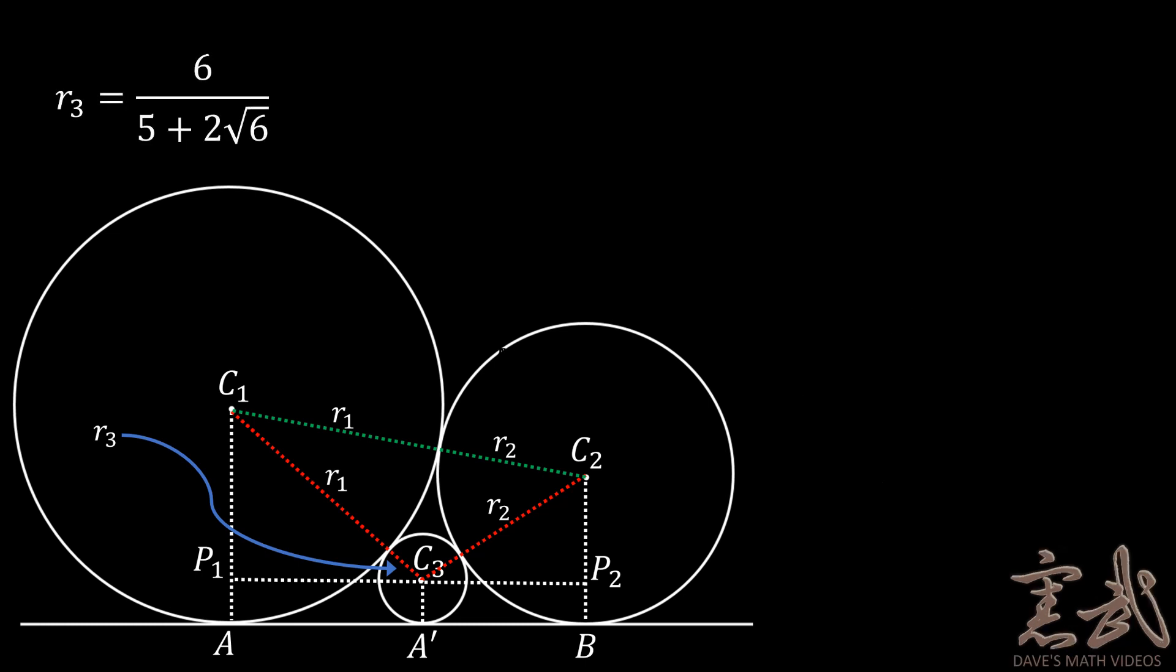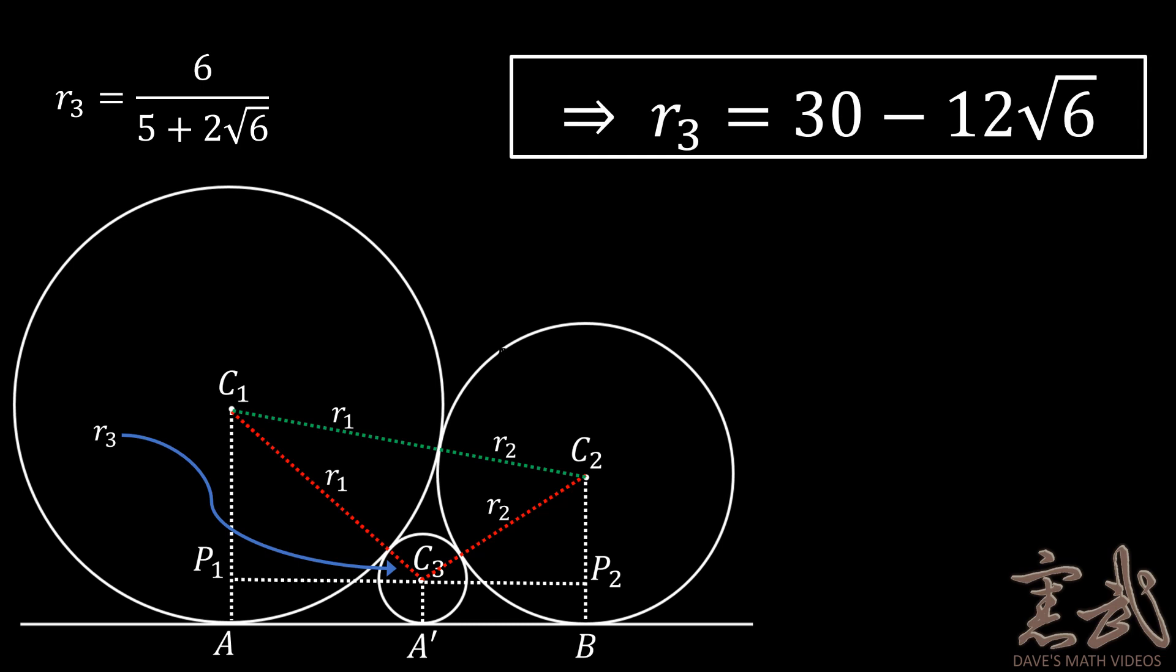We have that the square root of R3 is equal to 6 over the quantity 5 plus 2 times the square root of 6. And if we multiply the top and the bottom of this fraction by 5 minus 2 times the square root of 6, we would get that R3 is equal to 30 minus 12 times the square root of 6 as an exact answer.